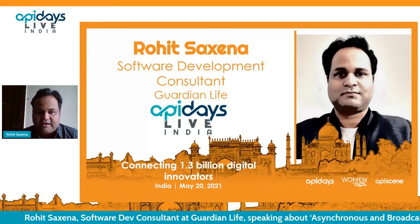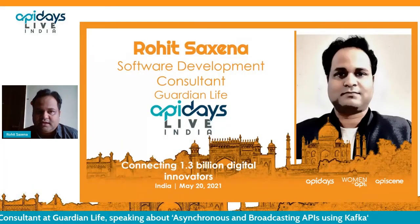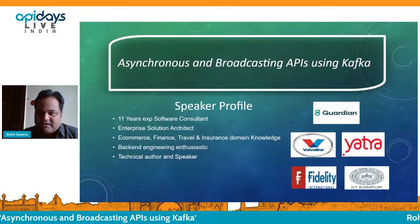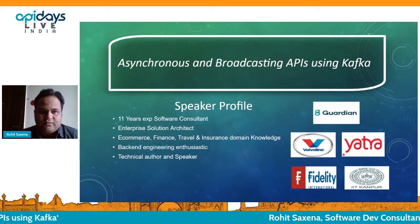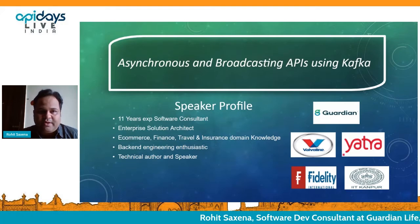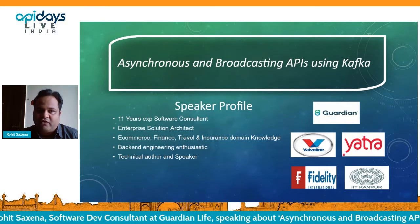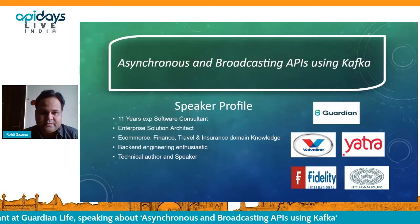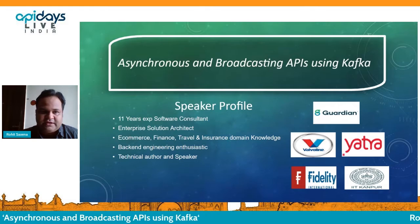My name is Rohit Saxena and I have around 11 years of industry experience. I've worked mainly at companies like Fidelity, Yatra, Valvoline, and Guardian Life. Here I'll be covering how we can build asynchronous and broadcasting APIs using Kafka, how it evolved, and what the future scope of these kinds of APIs looks like. Without wasting time, let me move to our agenda.